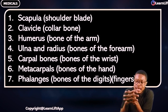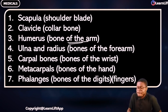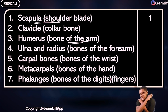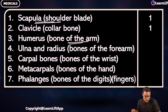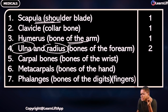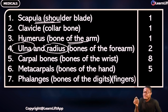Don't forget the bones of the upper limb: number one is the scapula or shoulder blade — one bone. Number two is the clavicle or collarbone — one bone. The humerus, bone of the arm — one bone. The ulna and radius, bones of the forearm — two bones. The carpals, bones of the wrist — eight altogether. The metacarpals, bones of the hand — five. The phalanges — fourteen altogether.